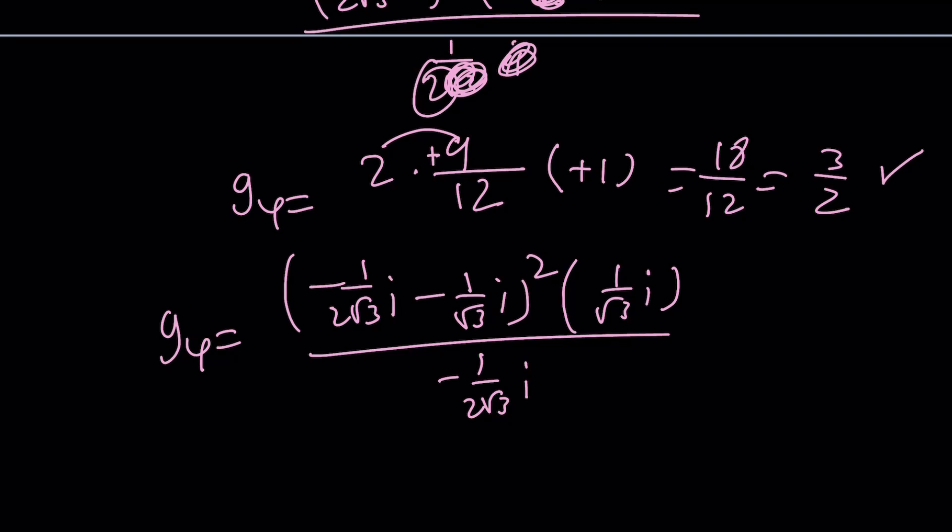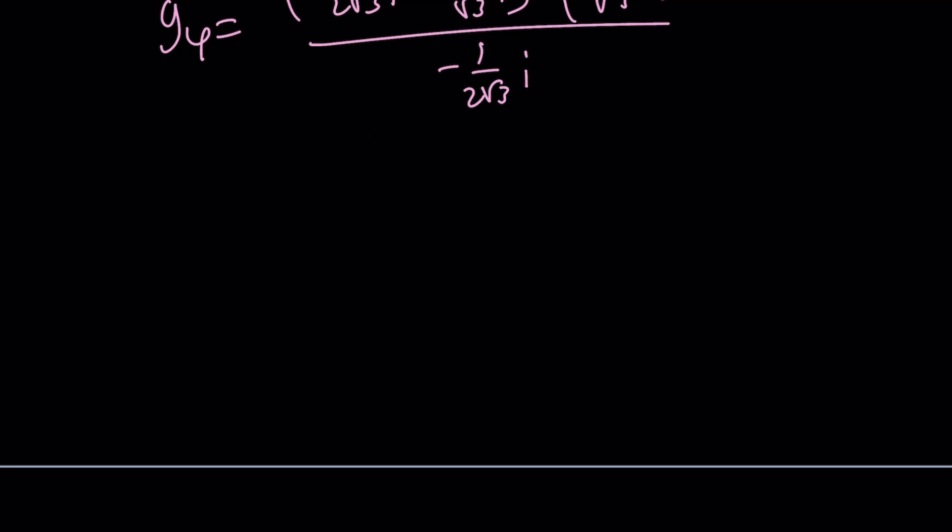Obviously, you could also approach this problem a little differently. You could consider G sub 0, G sub 1, G sub 2, G sub 3, and G sub 4. You're going to say G sub 0 times R is going to be G sub 1, because that's the common ratio.